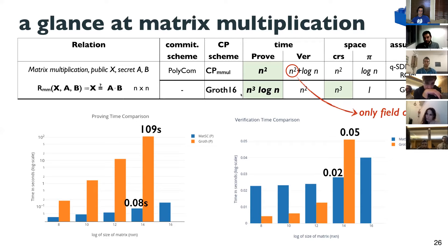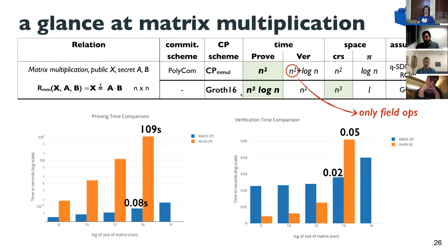Our verifier has a logarithmic factor in verification cost. But looking at experiments, verification — though initially higher than Groth16 — becomes much smaller as the matrix size increases. In our scheme, when there is a public output matrix, the verifier does only field operations related to the public matrix, whereas in Groth16 you must perform multi-exponentiations for those matrix entries.